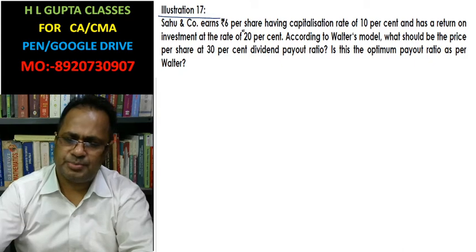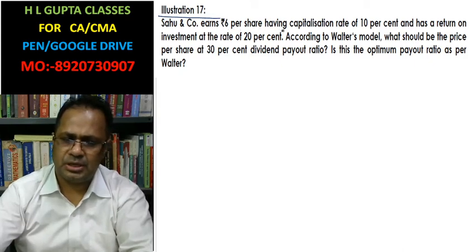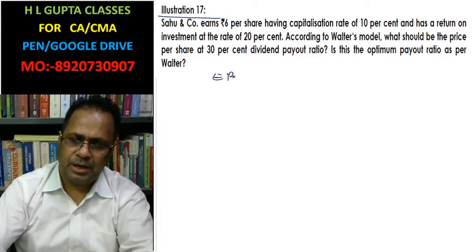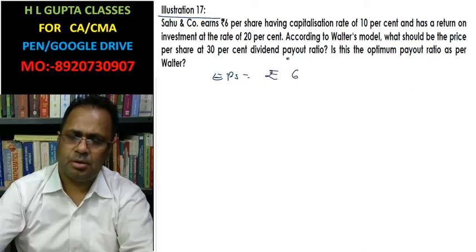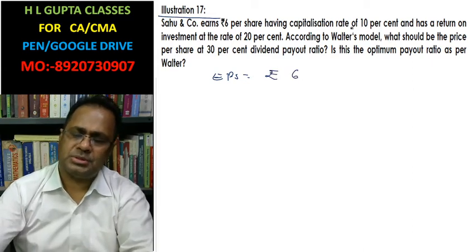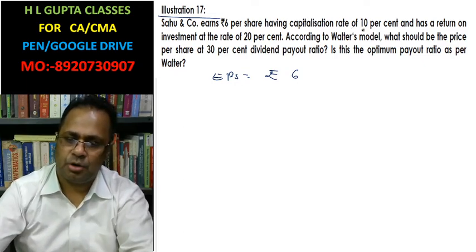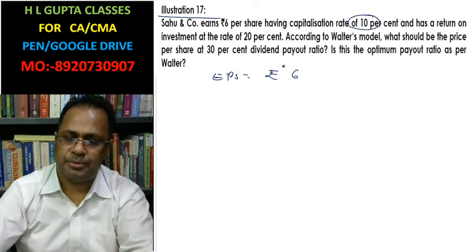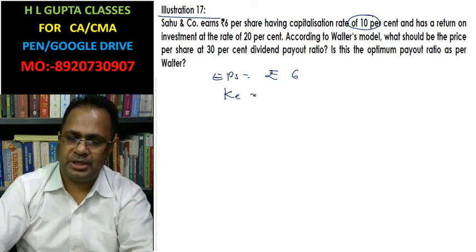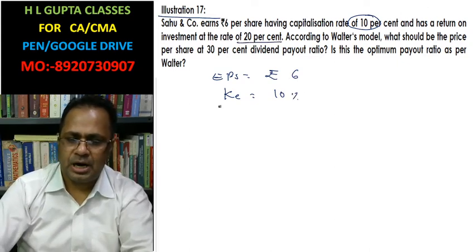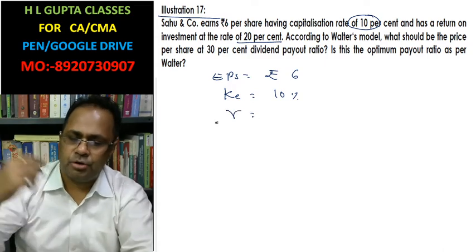Sao and Company earns Rs. 6 per share, having a capitalization rate of 10%. EPS is Rs. 6. Capitalization rate means the rate of raising capital — that is the cost of equity, KE, which is 10%. Return on investment, R, is 20%.